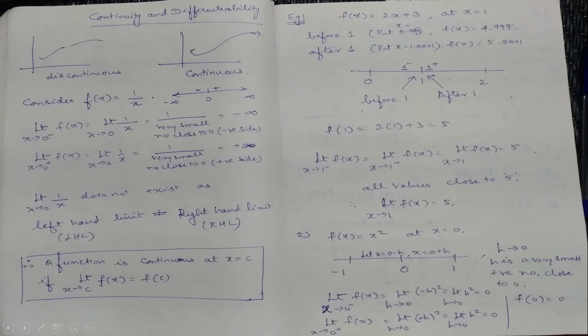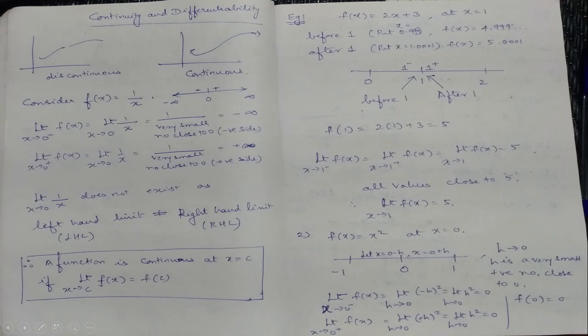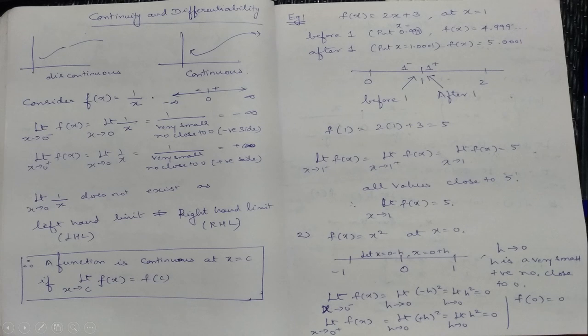Limit as x→0⁻ of f(x) equals limit as h→0 of f(−h). f(x) = x², so substituting x = −h: (−h)² = h². Limit as h→0 of h² = 0. For the right-hand limit, limit as x→0⁺ of f(x) equals limit as h→0 of (h)² = h². That also equals 0.